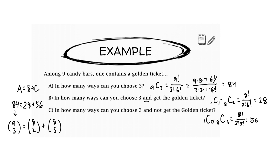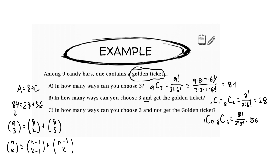Writing this with combinations, nine choose three equals eight choose two plus eight choose three. This is Pascal's rule in action: N choose K can be broken into N minus 1 choose K minus 1 plus N minus 1 choose K. We can understand why Pascal's rule is true because designating one item as special — here the golden ticket — splits the total into two cases: choosing it and getting the special, and choosing without the special, and those two cases must add up to the whole.